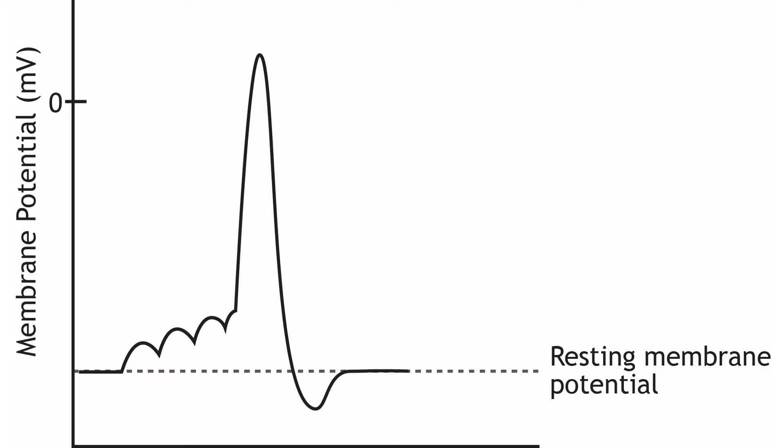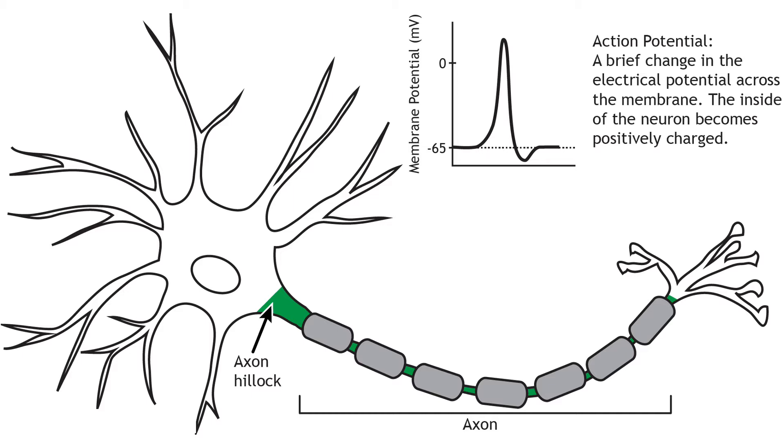As covered in Chapter 1, the action potential is a very brief change in the electrical potential, which is the difference in charge between the inside and outside of the cell. The membrane potential will begin at a negative resting membrane potential, will rapidly become positive, and then rapidly return to rest during the action potential. The propagation of the action potential from the axon hillock down the axon and to the presynaptic terminal results in release of chemical neurotransmitters that communicate with a postsynaptic neuron.